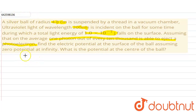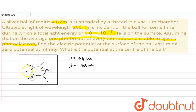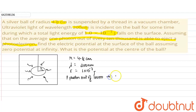We have been given that a silver ball having a radius of 4.8 cm is suspended in a vacuum chamber. Let us suppose this is our spherical silver ball having a radius r = 4.8 cm. Ultraviolet light having a wavelength of 200 nm is incident on this silver ball. In this time period, a total of 1 × 10⁻⁷ joules of energy falls on the surface. We assume that on average 1 photon out of 10,000 is able to eject a photoelectron.